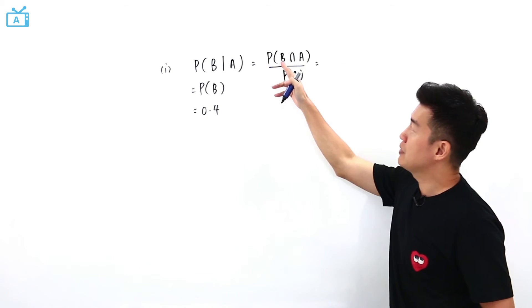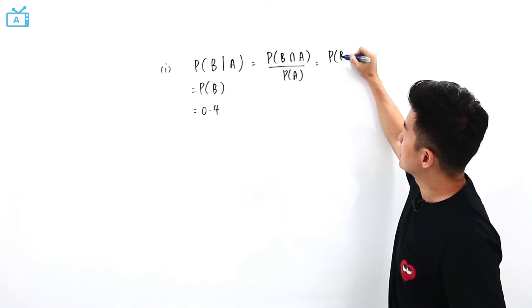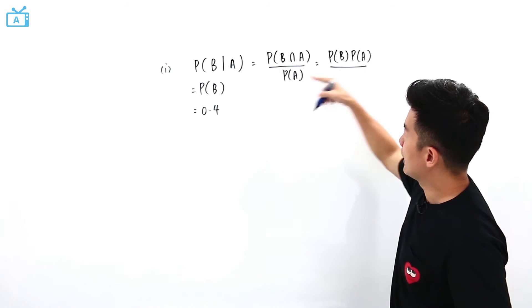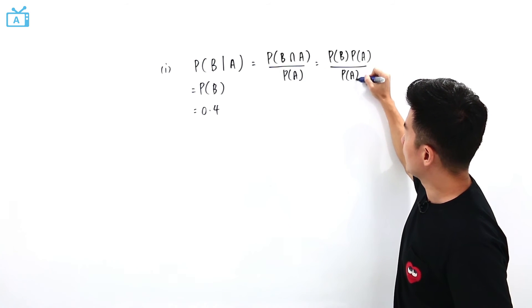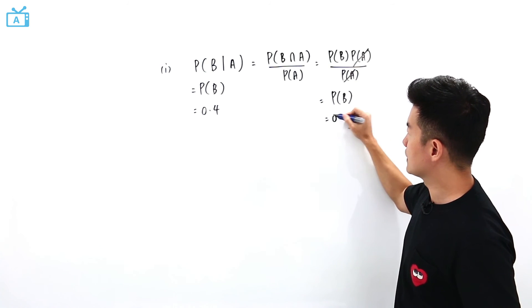And at the same time, when B and A are independent of each other, that means probability of B and A is probability of B multiplied by the probability of A and divided by the probability of A. So this can be cancelled. This is probability of B which is 0.4.